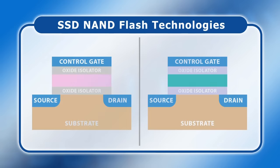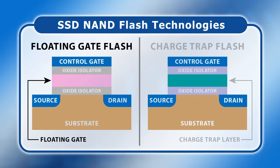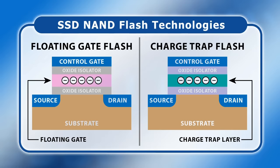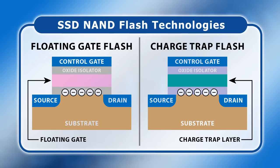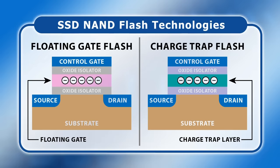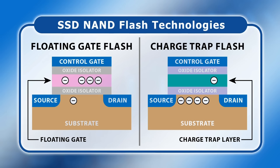Most SSDs store data in their flash memory chips using NAND logic gates. Two technologies are commonly used: floating gate and charge trap flash. To write or program data, a voltage is applied to move electrons into a floating gate or charge trap layer. The presence of these electrons changes the resistance between the memory cell's source and drain electrodes, which can be measured by passing a current between them, allowing data to be read from the cell. To erase the cell, a voltage or field is applied to remove the electrons. However, repeated program-erase operations weaken the cell material, resulting in electrons either escaping a floating gate or being retained in a charge trap layer.